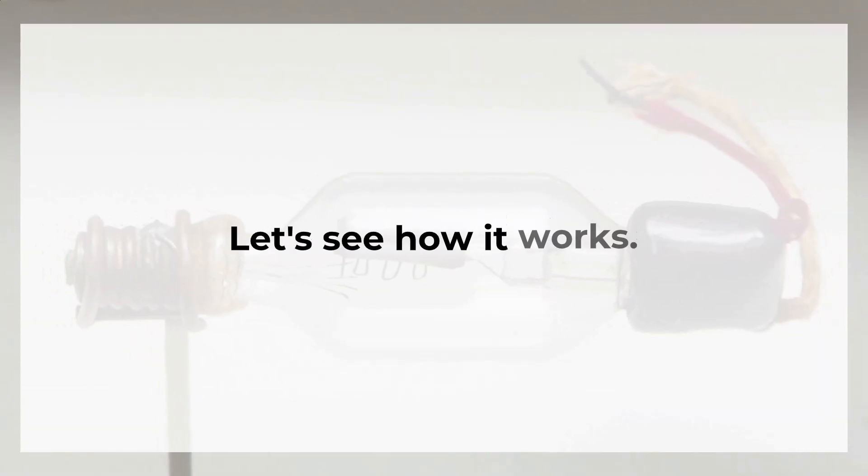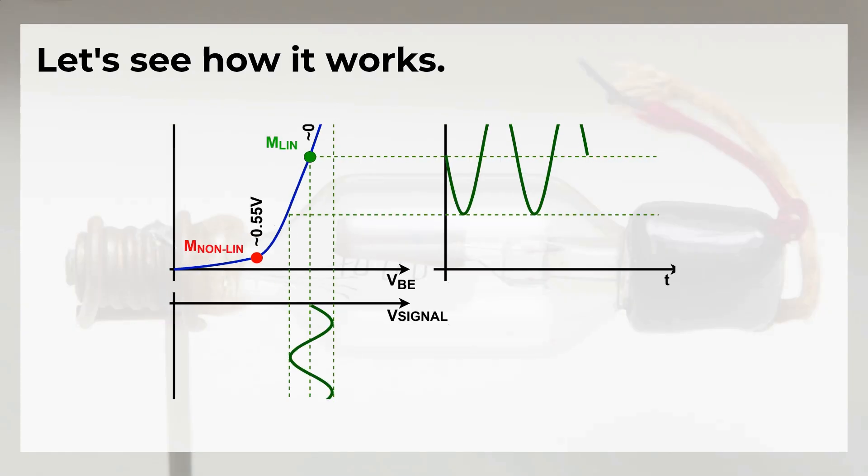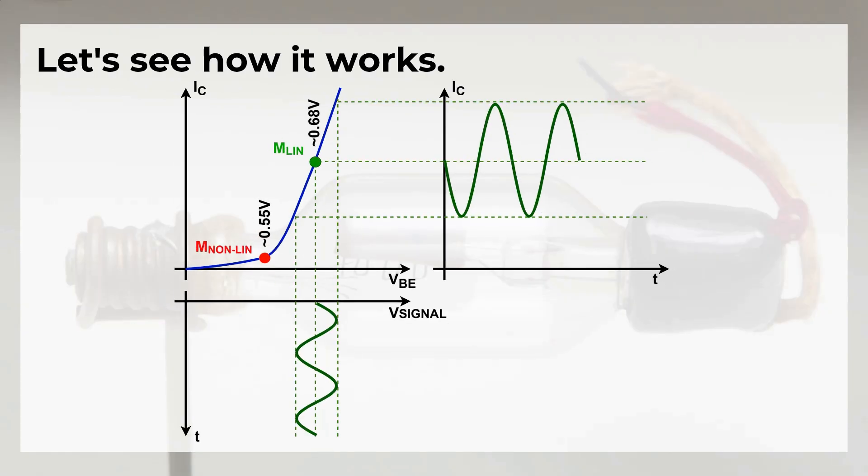Now let's take a look at how we can set the transistor for Audion operation. You can see these 3 charts. The first one shows the input characteristic of the transistor. The next shows the output as a function of time. And below that you can see the input signal. The green point represents a normal Q point of the transistor.